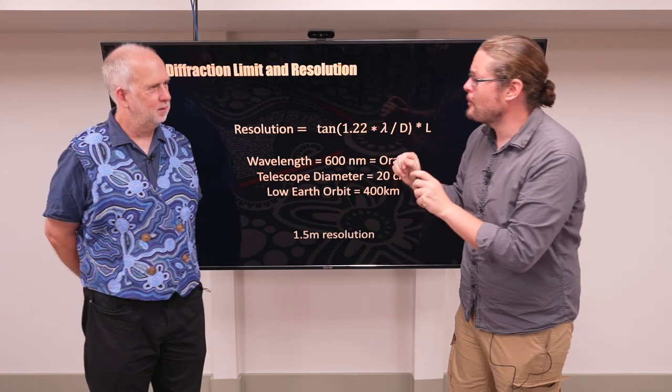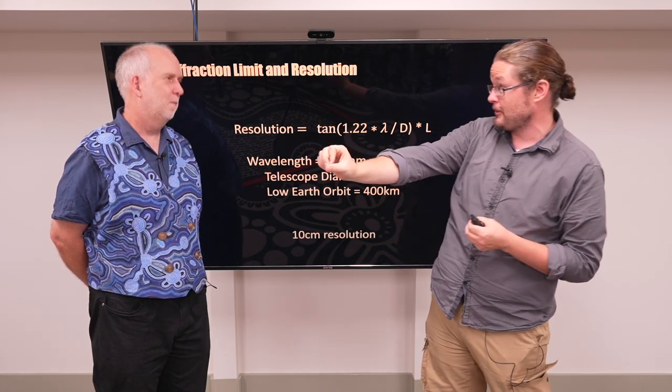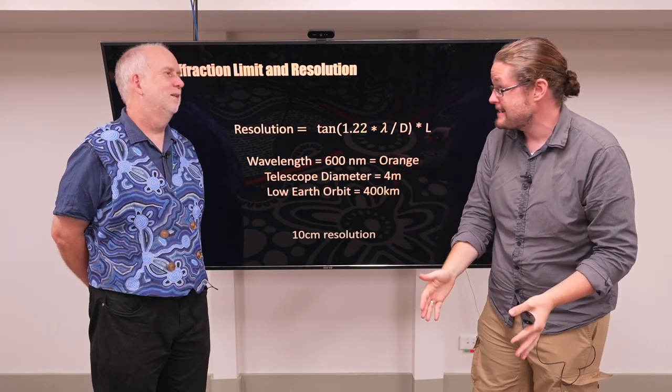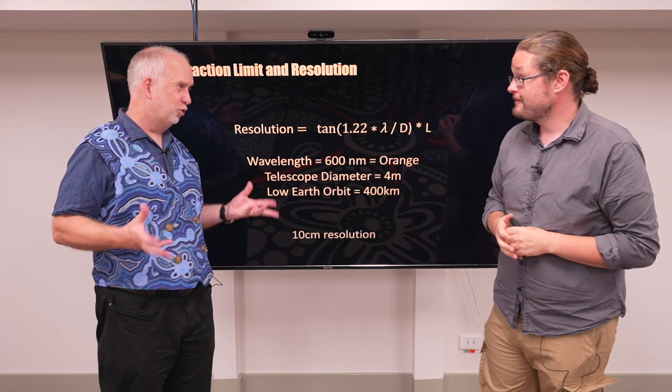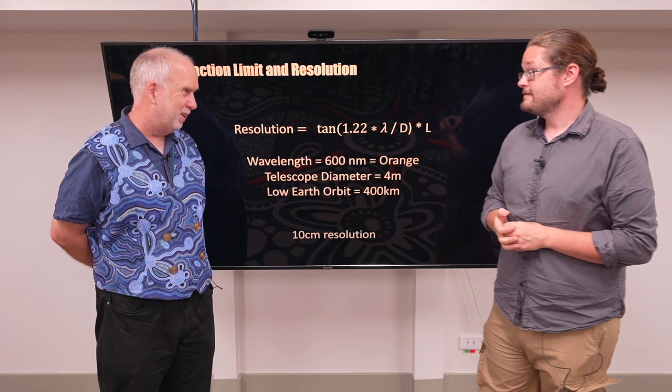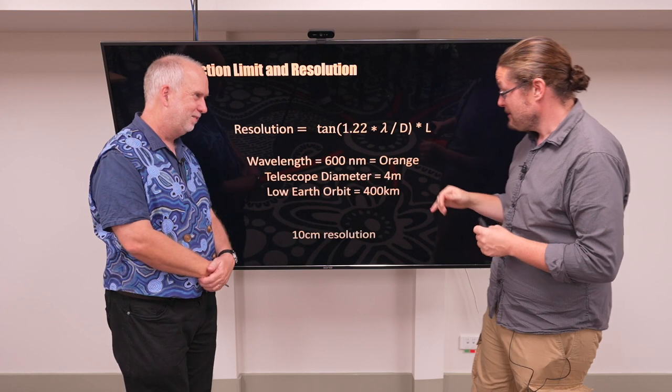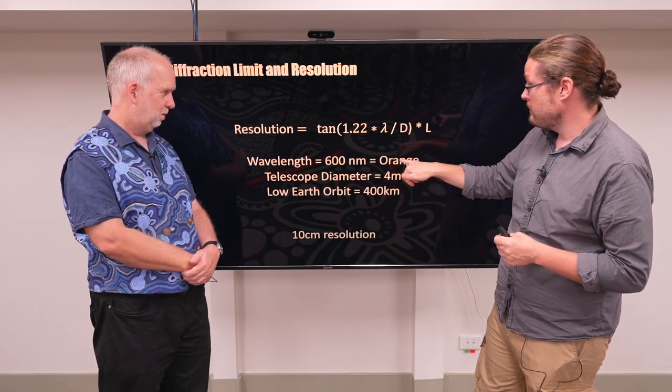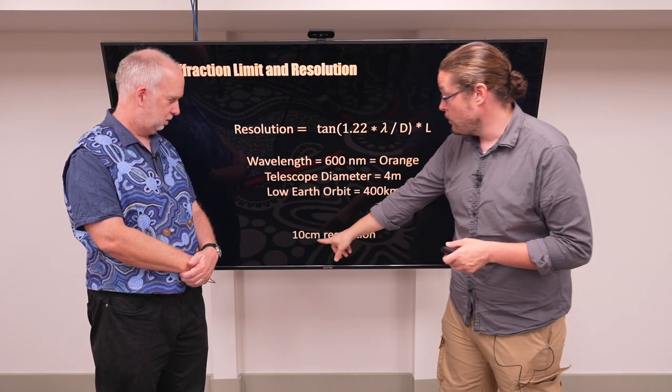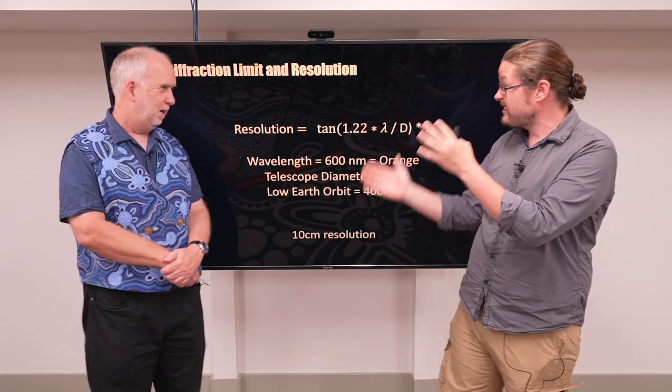But I want to see more than just you as a pixel. I want to see some detail. What can we do about it? Well, let's imagine now we put a 4 meter telescope in there. So this is taking Australia's largest telescope on the ground, the AAT, and putting it into space. And this is about the largest mirror you'd be able to fit in the nose cone of a rocket. Exactly. So it's unlikely there are spy satellites much bigger than this. We're getting pretty much a very expensive spy satellite. But we're going to keep the same orbit and the same colors of wavelength. So we're only changing the size of the mirror. And now we can see 10 centimeters. So that's actually starting to get some detail out of you.